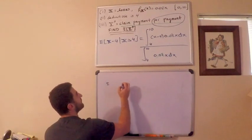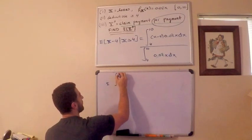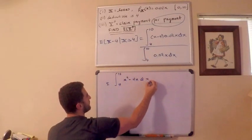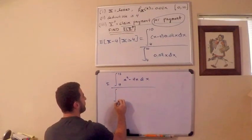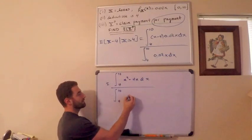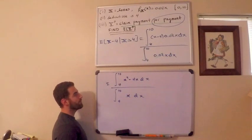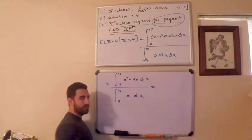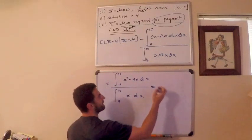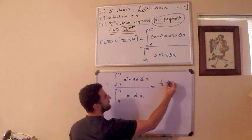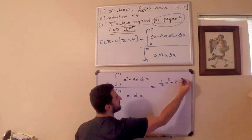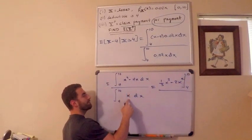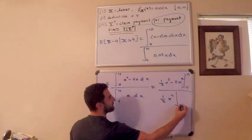Now what I have is the following. This is now equal to 4 to 10 of, distribute the X, so this is X squared minus 4X dX divided by 4 to 10 of X dX. So pretty straightforward. This is just 1/3 X cubed minus 2X squared going from 4 to 10 divided by, integrate this, increase the power, divide by 2, so this is 1/2 X squared going from 4 to 10.